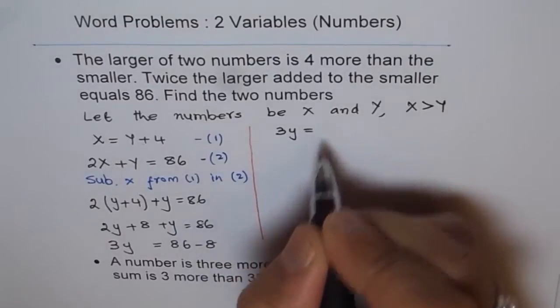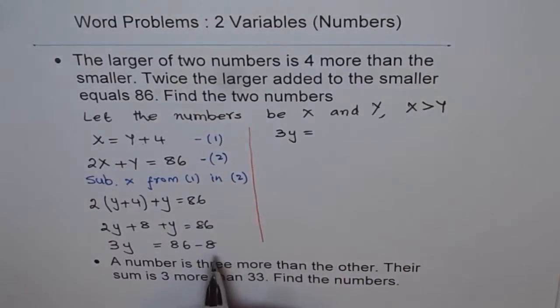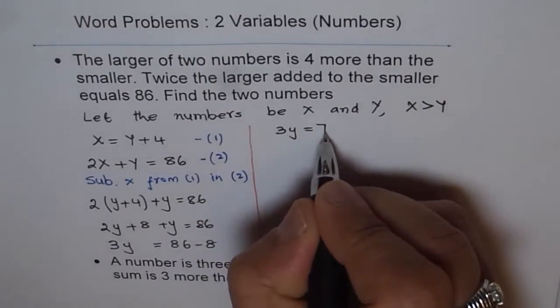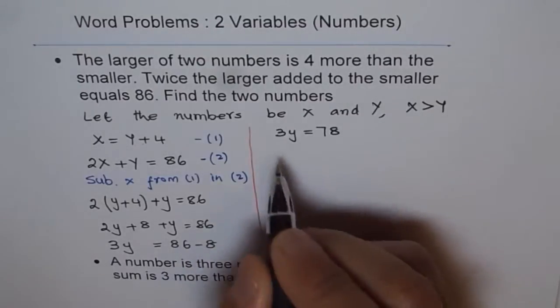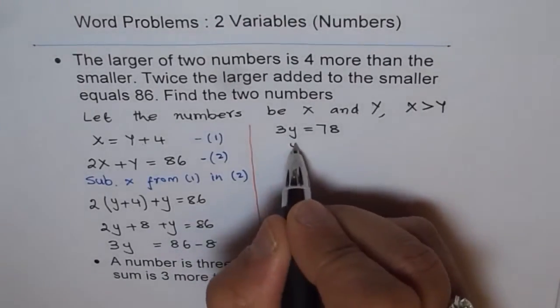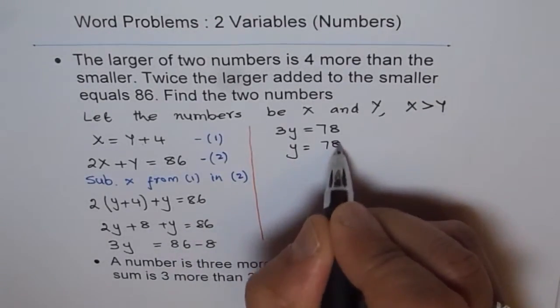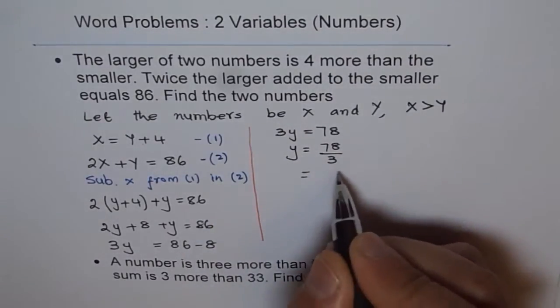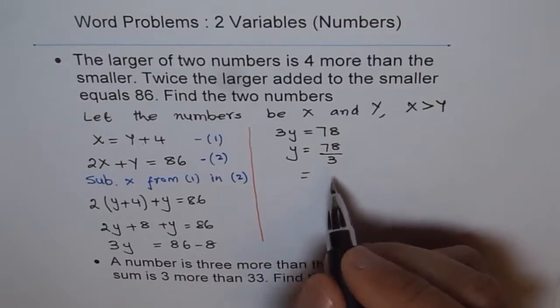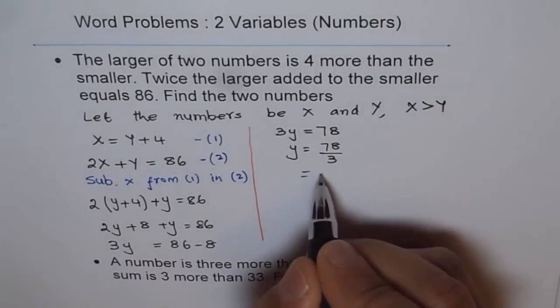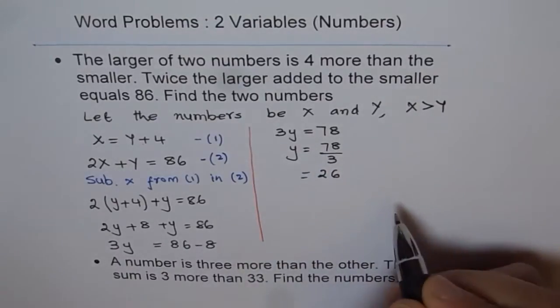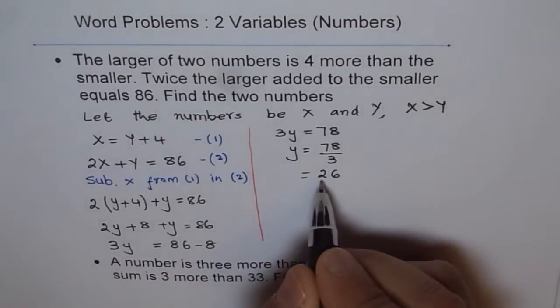3y equals to, what is 86 minus 8? You can use your calculator. 86 minus 6 is 80. And take away 2 more, 78. Now 3 times y is 78. So y will be 78 divided by 3. Now 78 divided by 3, 3 goes 2 times in 7. 3 times 2 is 6. Then we are left with 18. 3 times 6 is 18. So we get y as 26.